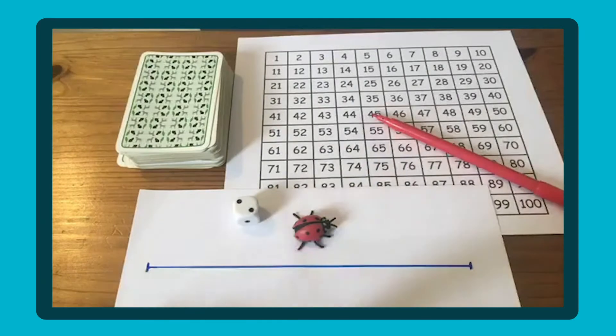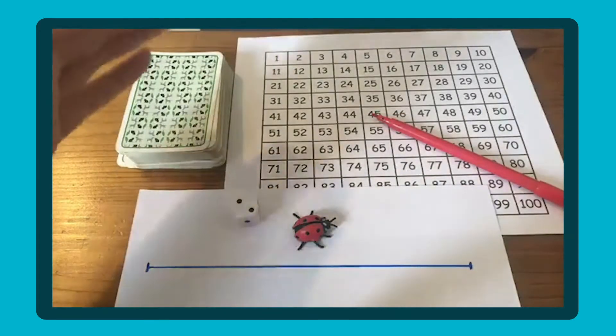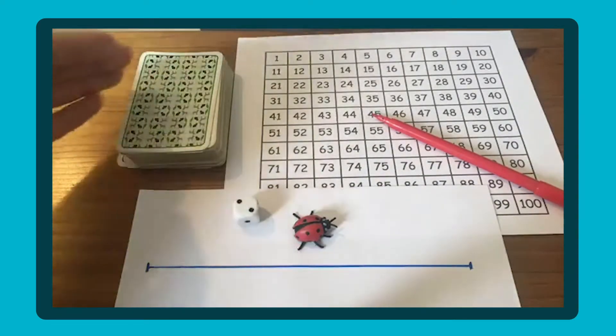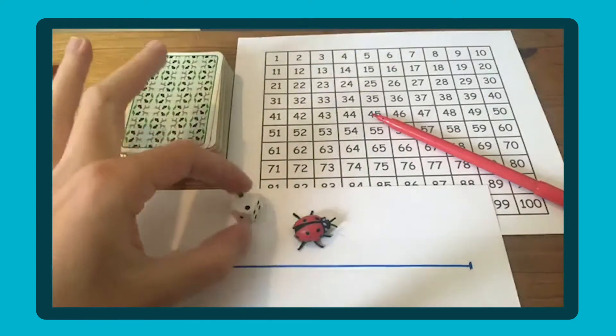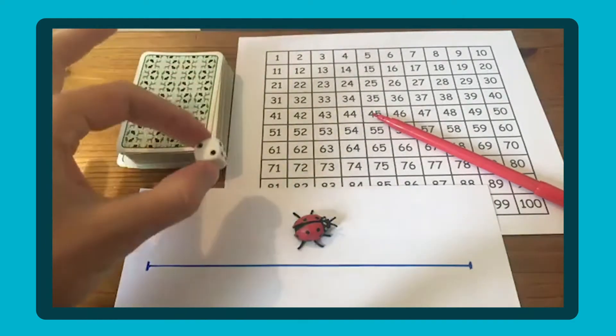Let's take a look at what you're going to need. To do this counting on activity, you'll need a few things: some playing cards or digit cards to generate a number, and a dice to add to that number.